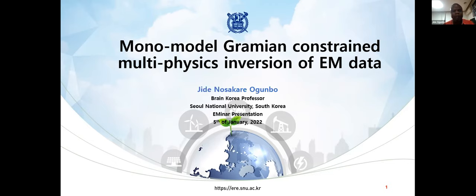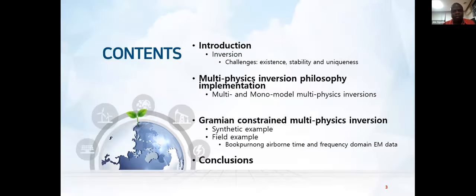I have here my presentation titled 'Monomodal Gramian-Constrained Multi-Physics Inversion of Electromagnetic Data.' My name is Chide Nasakare Ogunbo, a career professor at the Seoul National University of South Korea, at the Department of the College of Engineering. I'll go through several items: introducing the whole concept, then discussing multi-physics inversion philosophy, implementation, and the category of multi- or monomodal multi-physics inversion. I'll be interchangeably using multi-physics and joint inversion — they are the same.